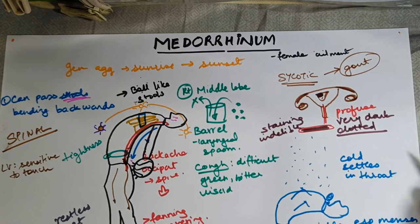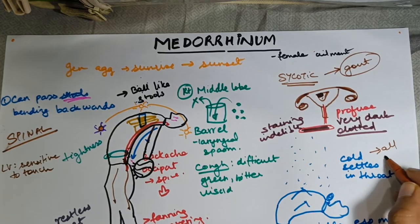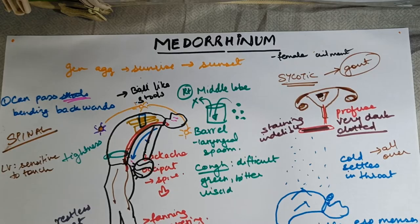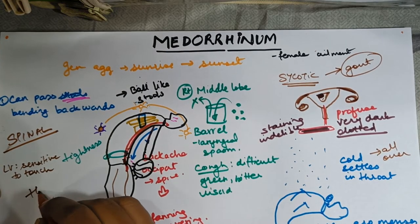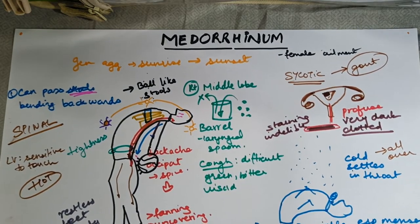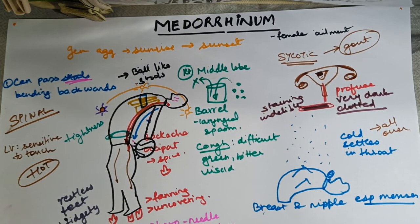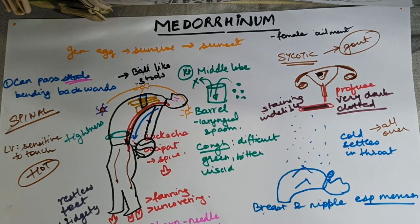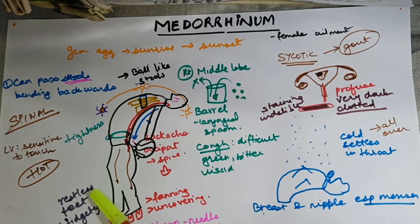Coldness is not just in throat and nipple but also all over — the body is cold to touch. Medorinam is a hot remedy, whereas Thuja is a chilly remedy. Both are used as anti-psoriatic remedies. If the patient is hot and you want an anti-miasmatic remedy, choose Medorinam; if the patient is cold, choose Thuja. Also, any complaints in the lower limbs suggest you can always think of Medorinam as an anti-miasmatic.